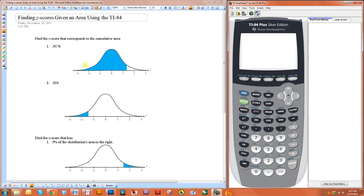For example, here I have a standard normal curve and it has a cumulative area of 0.9176. So I want to find the z-score that corresponds to that. So what I'm looking for is the value right here. What is this value right here?